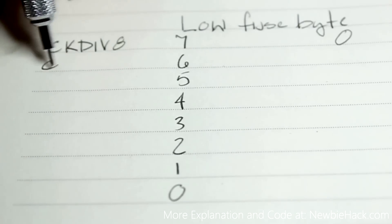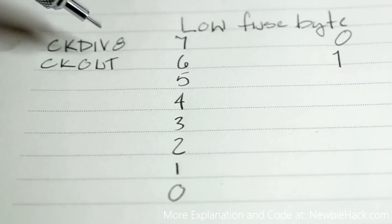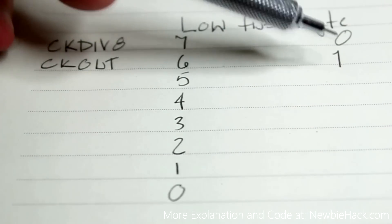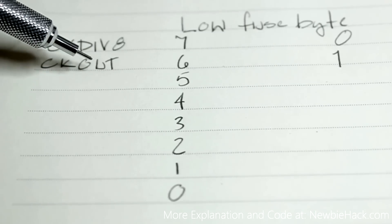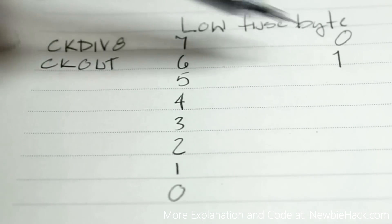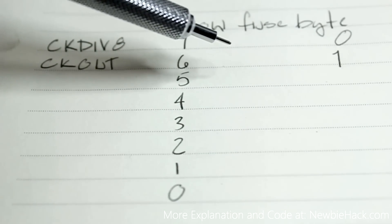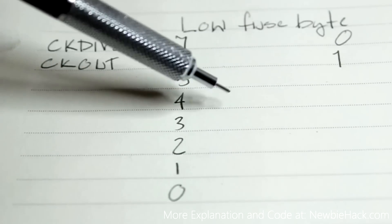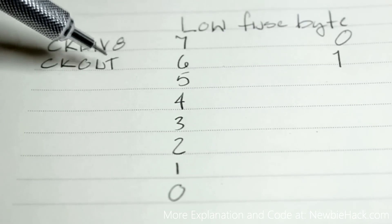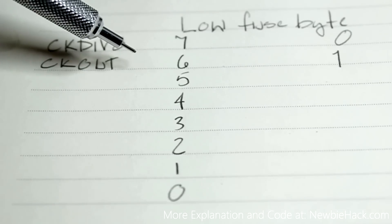The next one is CKOUT — clock out. This one is unprogrammed, so we're not using it. This fuse actually allows you to output the clock signal to pin B1. So if you had an oscilloscope on pin B1, you'd be able to see the clock and the pulses. This particular fuse bit could be interesting in future projects where you may need that clock signal to be available on a pin so you can use it.